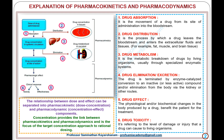Explanation of pharmacokinetics and pharmacodynamics: the relationship between dose and effect can be separated into pharmacokinetic (dose-concentration) and pharmacodynamic (concentration-effect) components. The concentration provides the link between pharmacokinetics and pharmacodynamics and is the focus of the target concentration approach to rational dosing.